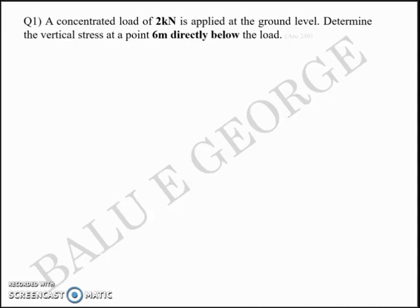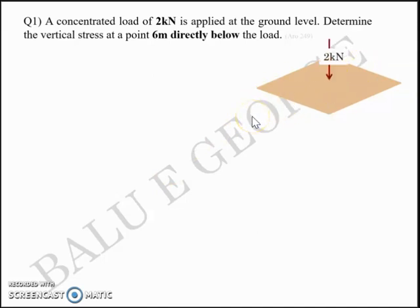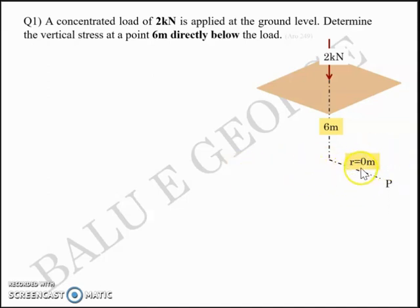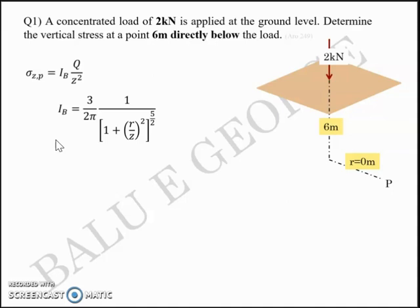The first example is based on the Boussinesq equation: a concentrated load of 2 kN is applied at the ground level. Determine the vertical stress at a point 6 meters directly below the load. Since it is directly below, there is no radial distance given — so R = 0 and Z = 6 m, with Q = 2 kN. Using σZ at P = IB × Q/Z², where IB = (3/2π) × 1/(1 + (R/Z)²)^(5/2).